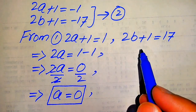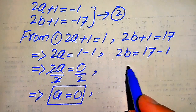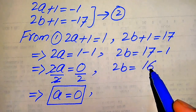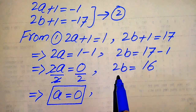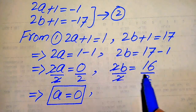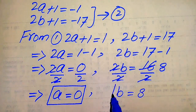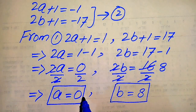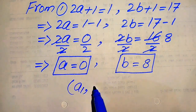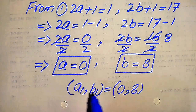For b in Case 1: from 2b plus 1 equals 17, moving plus 1 to the right hand side gives 2b equals 17 minus 1, so 2b equals 16. Dividing both sides by 2, b equals 8. So the first solution of the given equation is (a, b) equals (0, 8).